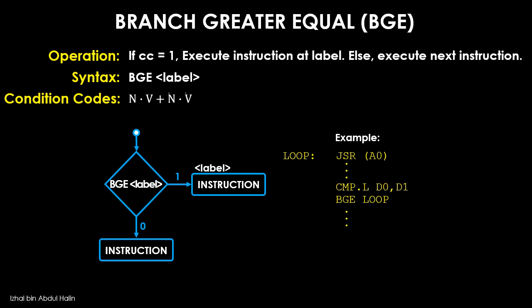Here is an example of how the BGE instruction is used. Notice how a compare instruction is placed before the BGE instruction. When CMPL D0, D1 is executed, the data values in D0 and D1 are compared as follows: the destination is subtracted by the source operand, and the result is not saved in the destination.